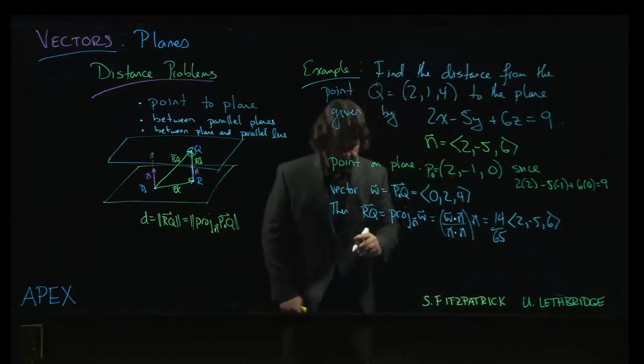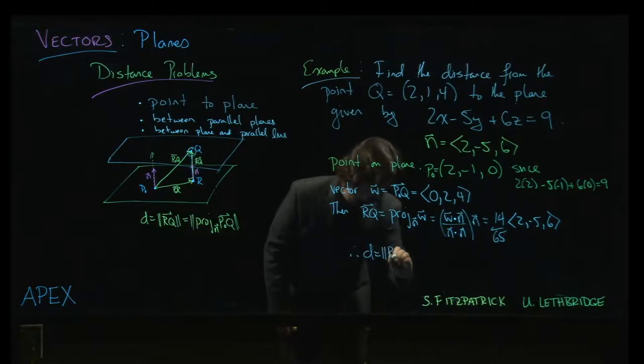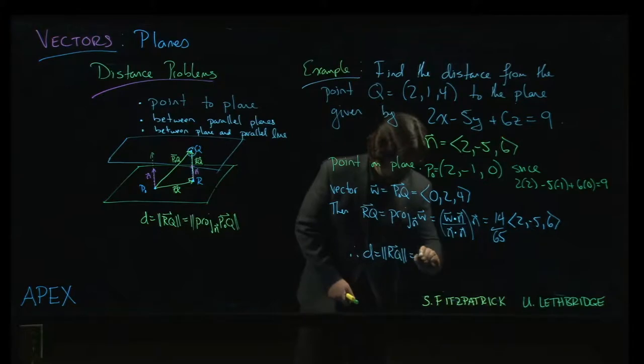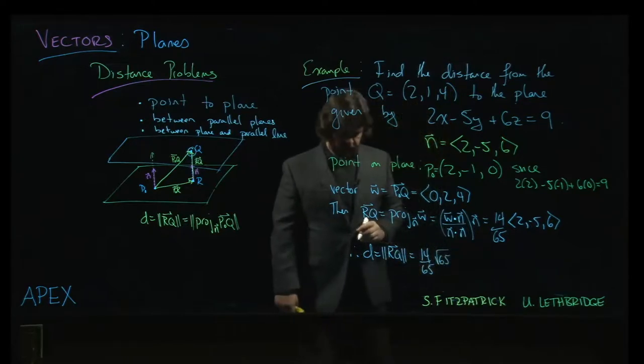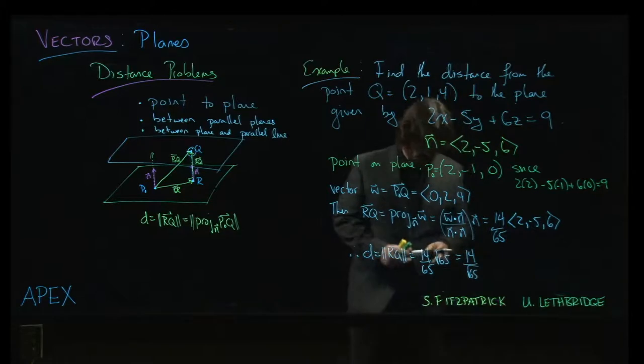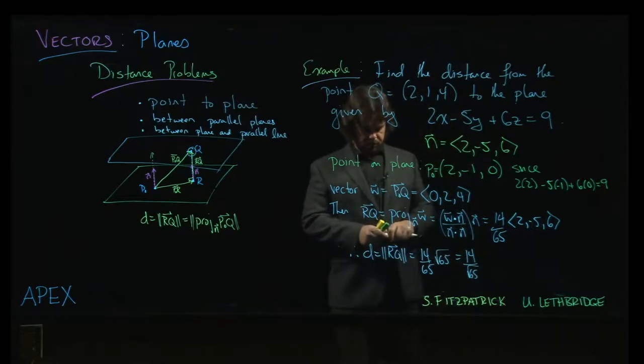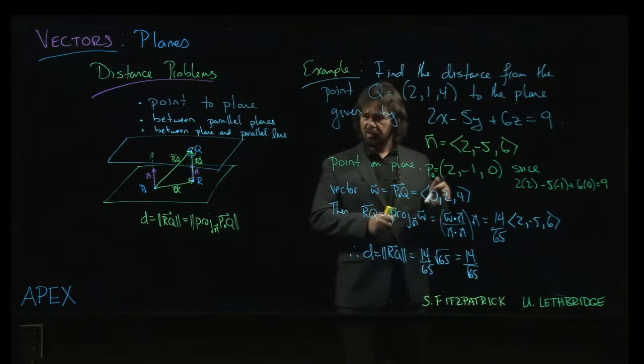That means our distance, which is the magnitude of this vector, is going to be 14/65 times the magnitude of n, which is just the square root of n dot n, so root 65. If you want to, you could write that as 14 over the square root of 65. I think that's about the best we can do with it.